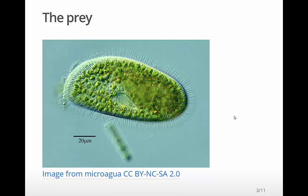This is the prey that they're eating. These are Paramecium and these guys are much smaller. You can see there's 20 micrometers there, so typically they're less than 100 micrometers in size. So about 20% the size of the predator.